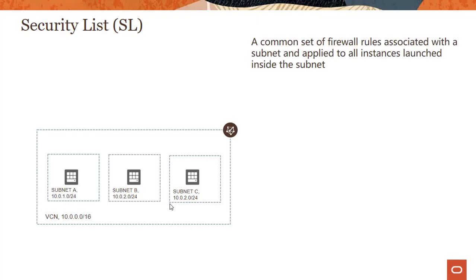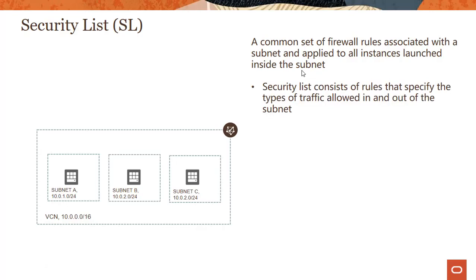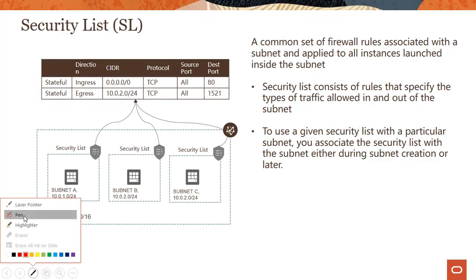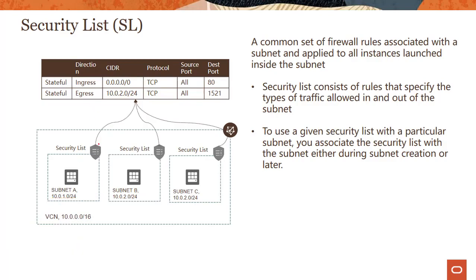So what is a security list? A security list is a common set of firewall rules associated with a subnet and applied to all instances launched inside the subnet. It consists of rules that specify the types of traffic allowed in and out of the subnet. The key point to notice here is that the security list is applied at the subnet level.